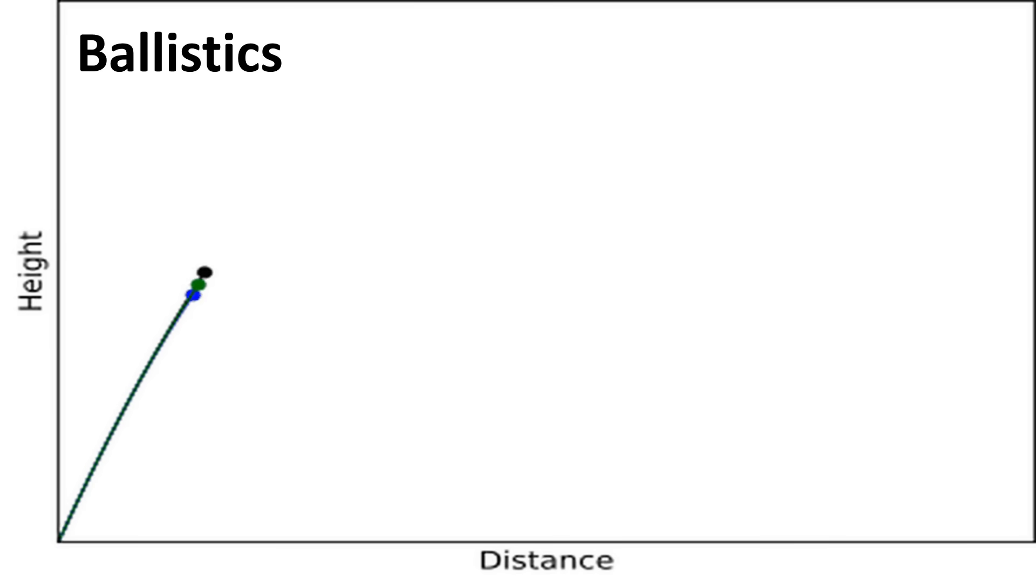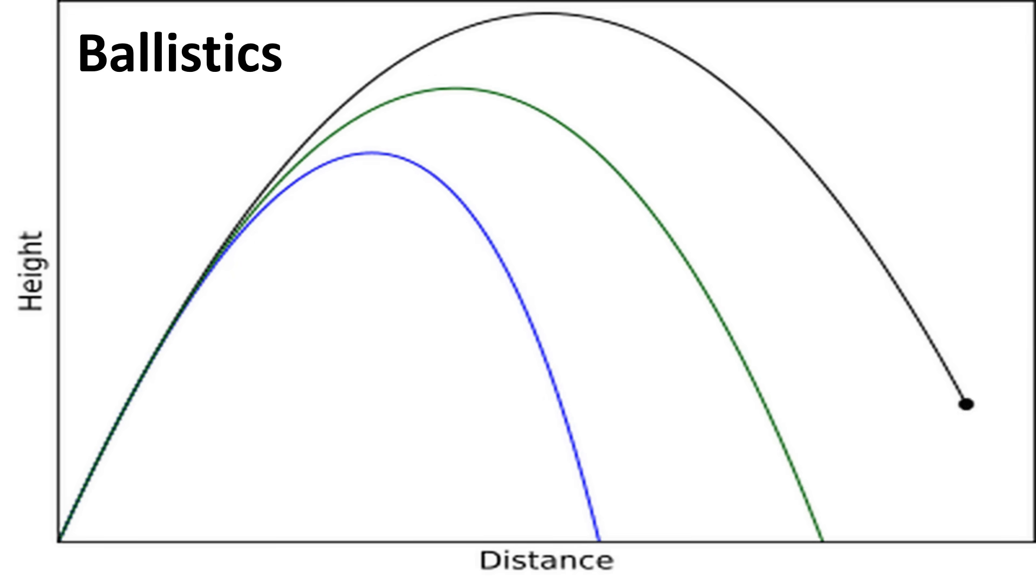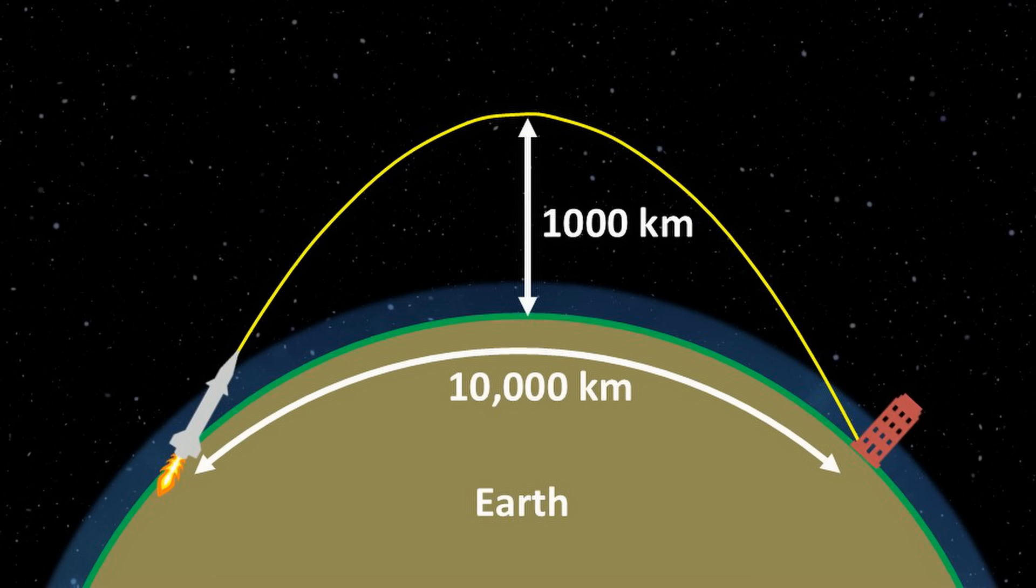Earlier, we discussed that if a projectile is to reach greater distances, it must also travel higher. The same principle applies to ICBMs. The maximum height, or apogee, of an ICBM's parabolic path is between 800 to 1,000 kilometers. This means such missiles completely leave the Earth's atmosphere.